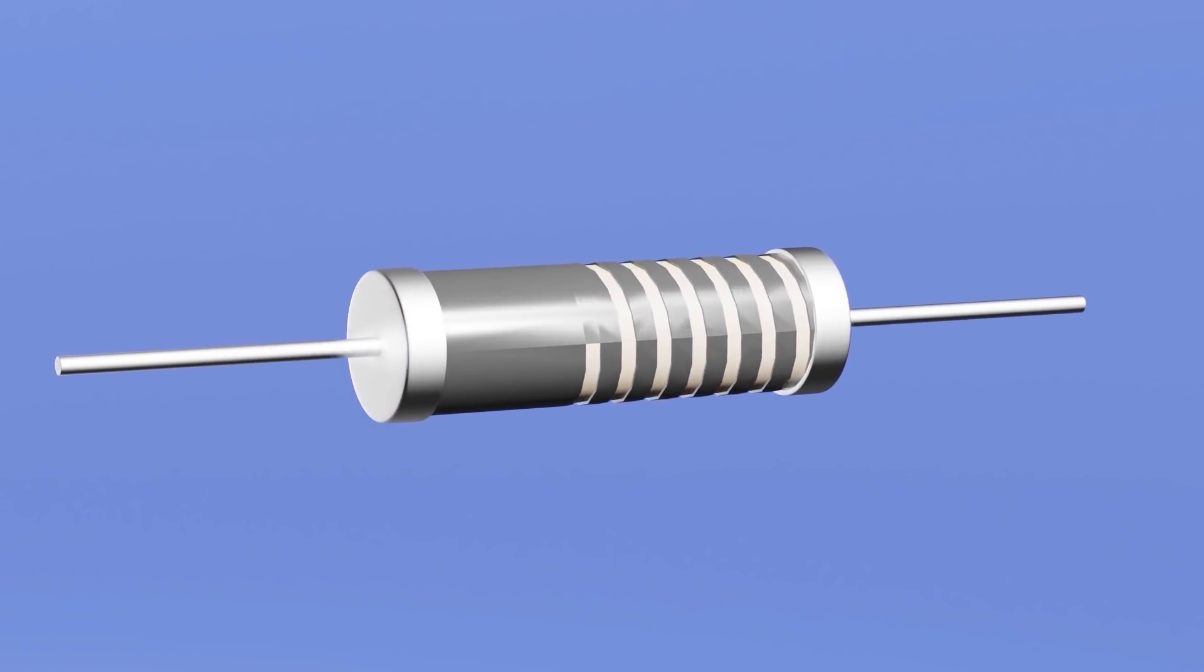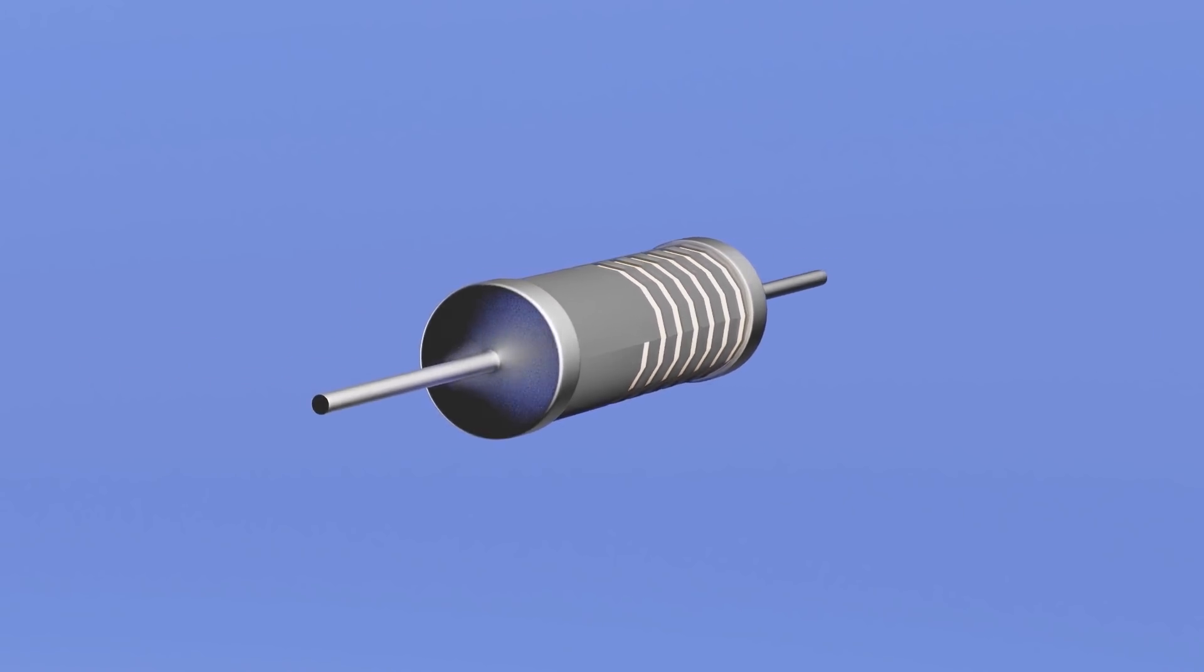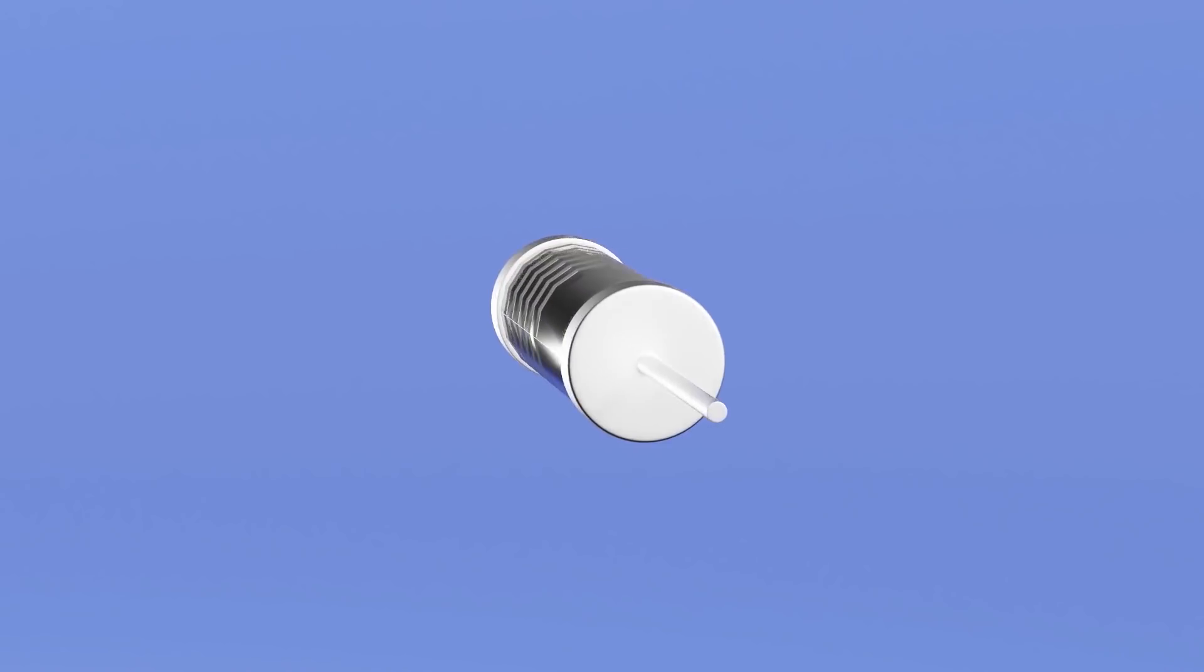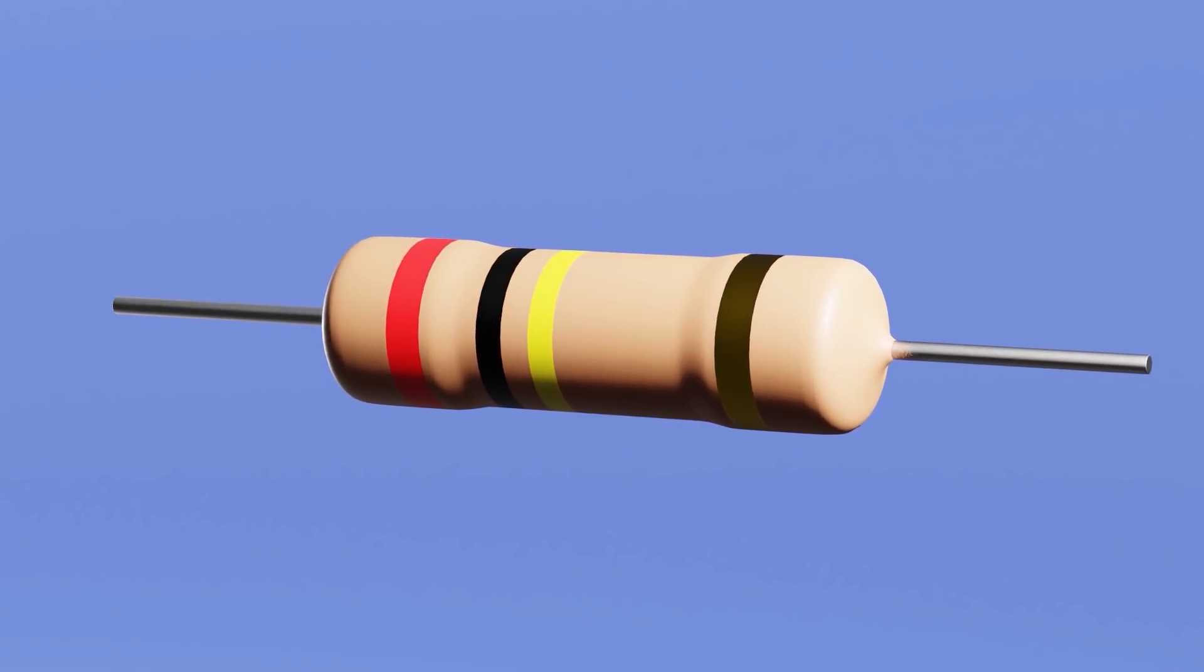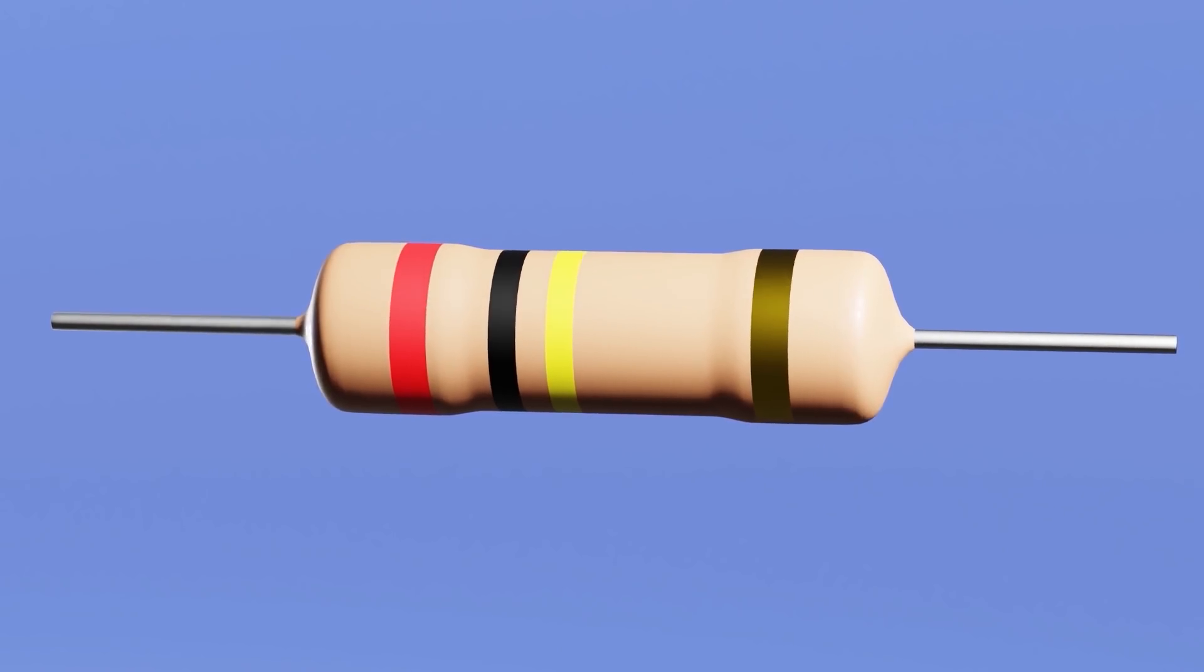As generally these resistances are so small, it would be quite difficult to print what their value is. That's why was invented a code of colors. By which we can know its value in ohms, even without numbers.